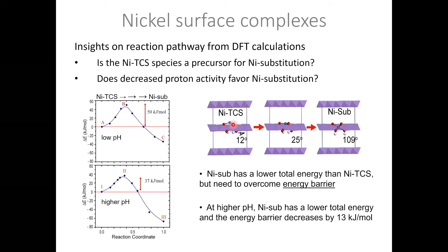We were also able to model the interlayer nickel triple-corner-sharing complex and progressively lower it into the vacancy site, so that we could look at the transition from nickel TCS to nickel substitution and get insight into whether the TCS species is a precursor for nickel substitution, and whether the decrease in proton activity — simulated by removing protons — favors nickel substitution. We calculate the energy barrier for that transition for two different pH environments, and we see that nickel substitution is more energetically favorable and has a lower energy barrier at higher pH values.